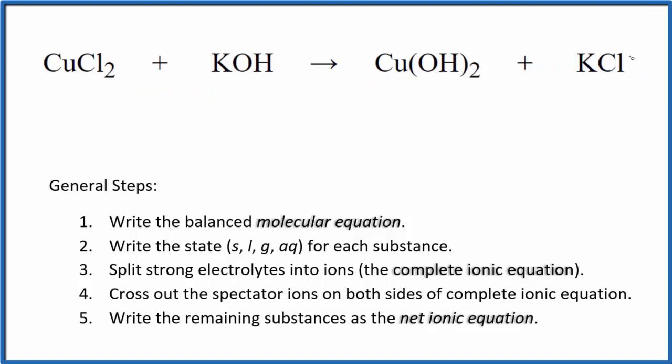I can see right away that I have a chloride here, but I have two of them here, so I'm gonna put a 2 in front of the potassium chloride. Now I have two potassiums and two chlorides, so I only have one potassium here. Let's put a 2 here. That balances the potassiums. I have two hydroxides, and here I have two hydroxides, one copper and one copper. So this is the balanced molecular equation.